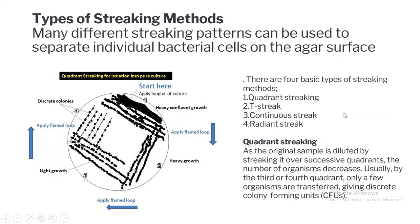Here we have a diagrammatic representation of how quadrant streaking is done. As you can see, the plate is divided into four different quadrants. First, you make your inoculation in the first quadrant, also known as the inoculation zone, applying a loopful of culture by making parallel streaks. After that, we flame the loop and then make streaks in the second quadrant. We continue this process for the third and fourth quadrants. By the time we reach the fourth quadrant, we generally get the formation of isolated colonies that are discrete and separate from each other.